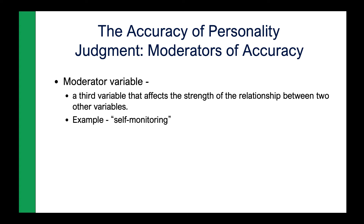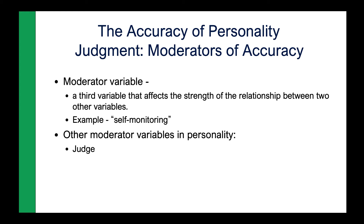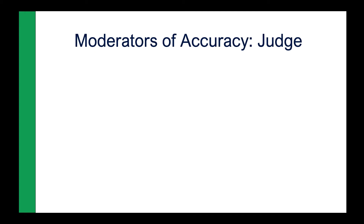So what are the other moderator variables we need to consider when judging someone's personality accuracy? There are four: the judge — the person doing the personality judgment; the target — the person whose personality is being judged; the trait — the specific trait you're judging, whether it's sociability, neuroticism, or agreeableness; and the information — what kind of information do you have? Were you able to observe them for five minutes versus five hours, or in multiple settings versus just one?